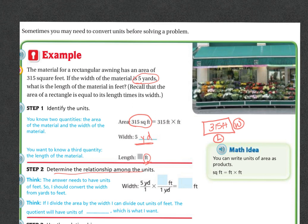Determine the relationship among the units. The answer needs to have units of feet. So I need to convert the width from yards to feet. In every one yard, there are three feet. So if I do five times three, that's going to give me how many feet there are in five yards. And that is 15. Three times five is 15.